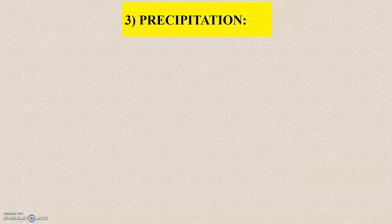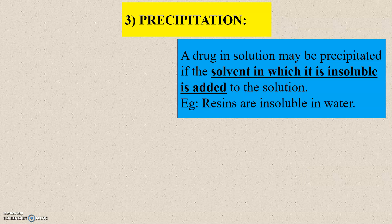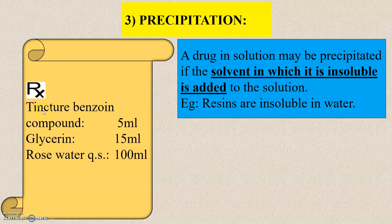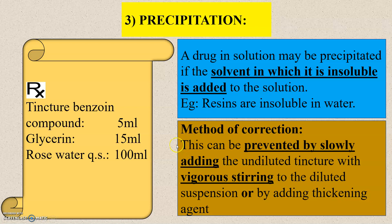The next reason is precipitation. A drug in solution may be precipitated if the solvent in which it is insoluble is added to the solution. For example, resins are insoluble in water. In this prescription, the ingredients are tincture benzoic compound, glycerin, and rose water. The method of correction: tincture benzoic compound contains resins, and the change in solvent system results in an unavoidable precipitate. This can be prevented by slowly adding the undiluted tincture with vigorous stirring to the diluted suspension, or by adding a thickening agent.